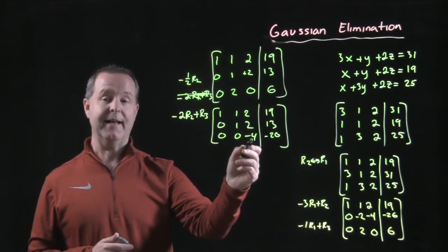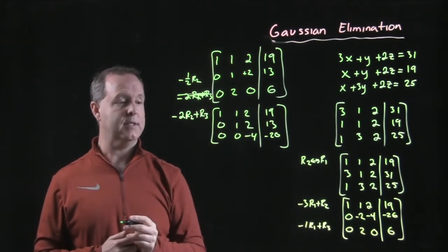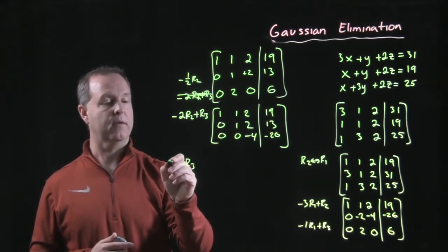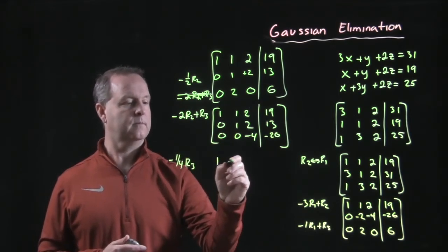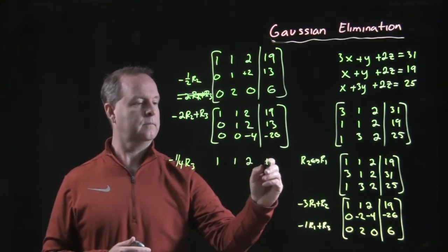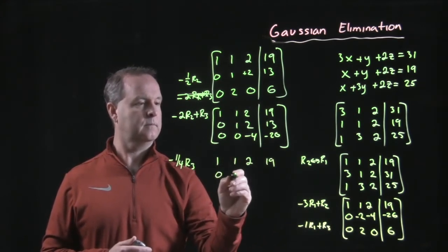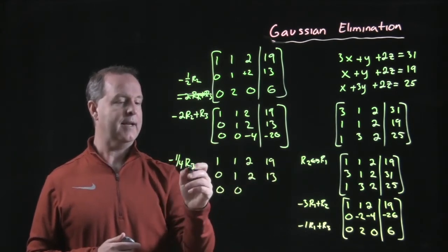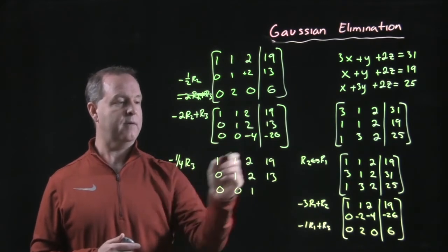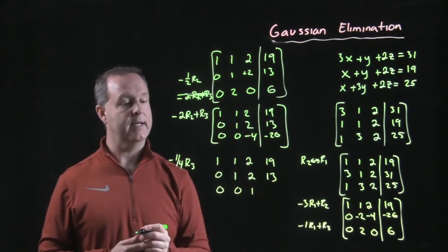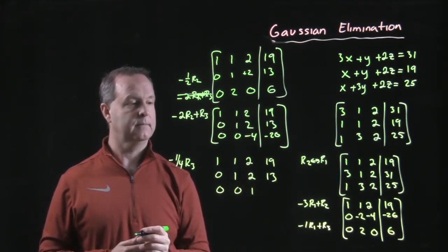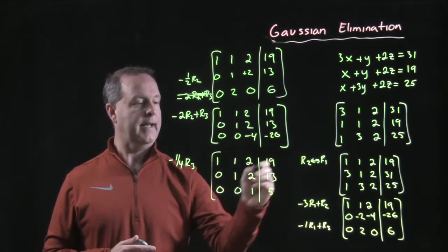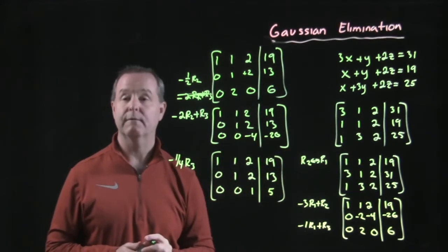I want a one in that spot right there in that diagonal. So let's go ahead and multiply row three by negative one fourth. Negative one fourth times negative four is one. Negative one fourth times negative 20 is five. And now I was able to convert this matrix into row echelon form.